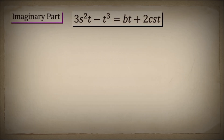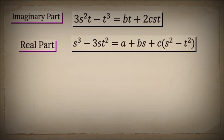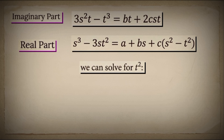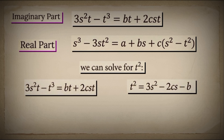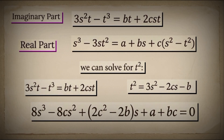We separate real and imaginary parts. The imaginary part gives us 3s squared t minus t cubed equals bt plus 2sct. The real part gives us s cubed minus 3st squared equals a plus bs plus c times s squared minus t squared. Two equations, two unknowns. But when we solve for t squared from the imaginary equation and substitute it back into the real part equation, something unexpected happens: we don't get a solution. Instead, we get another cubic equation, this time for s: 8s cubed minus 8cs squared plus 2c squared minus 2b times s plus a plus bc equals zero. We have not simplified the problem — we have only transformed one cubic into another cubic. We're walking in circles. This is a dead end.